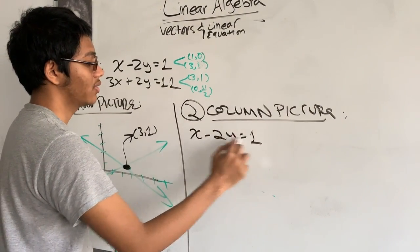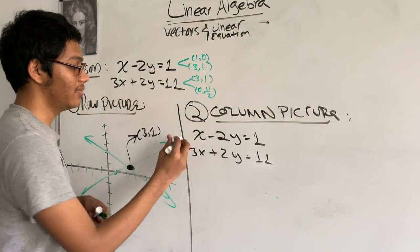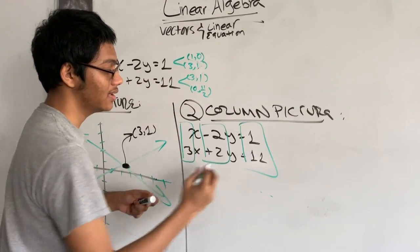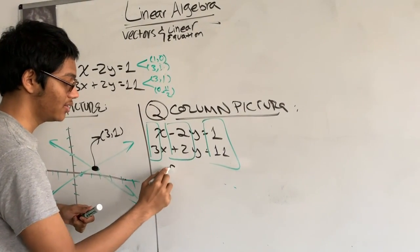x minus 2y is 1, and 3x plus 2y is 11. When I say take the columns, I mean take the coefficients of the linear equation and treat them as column vectors. So this is where the do now comes in.